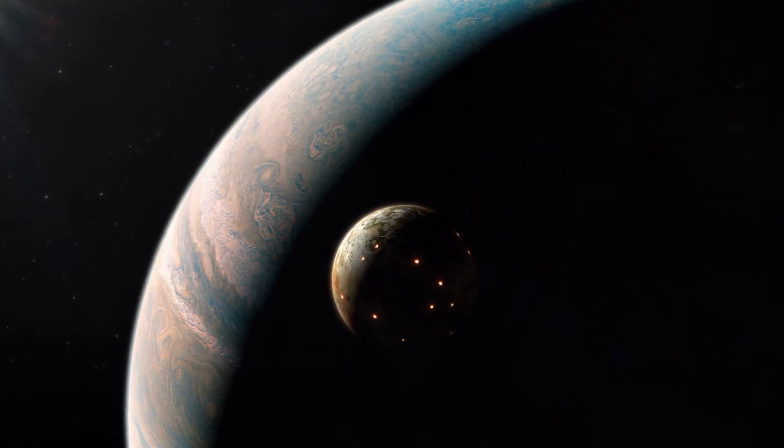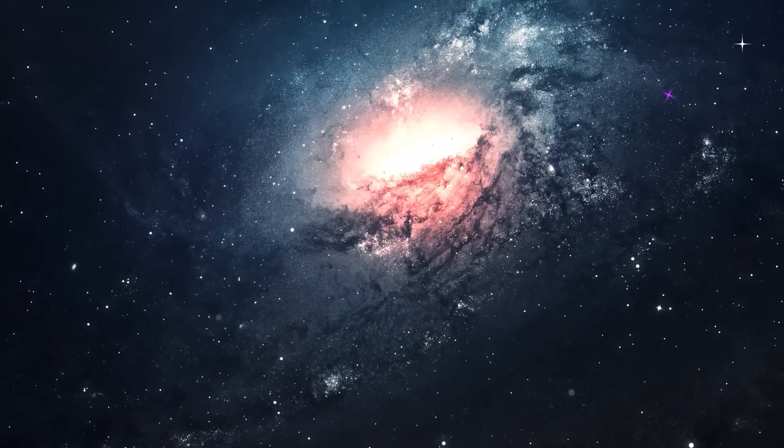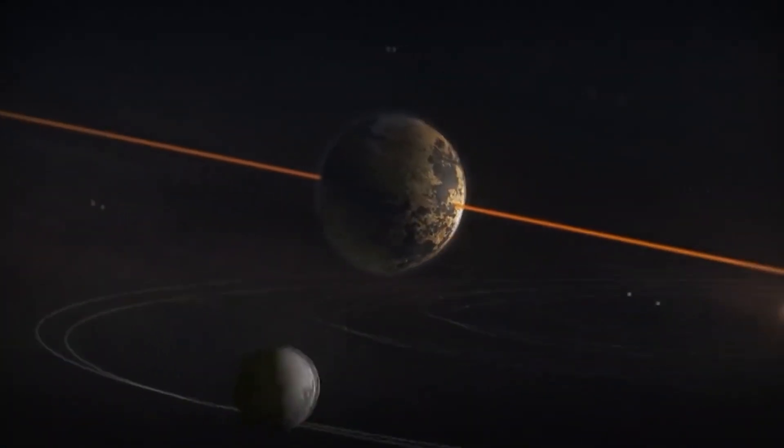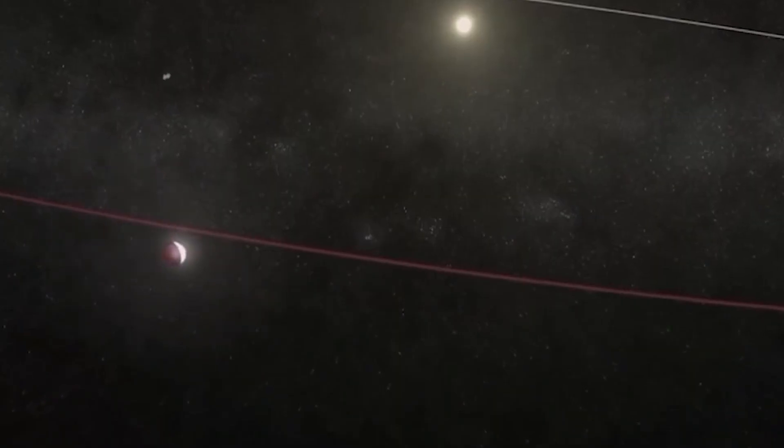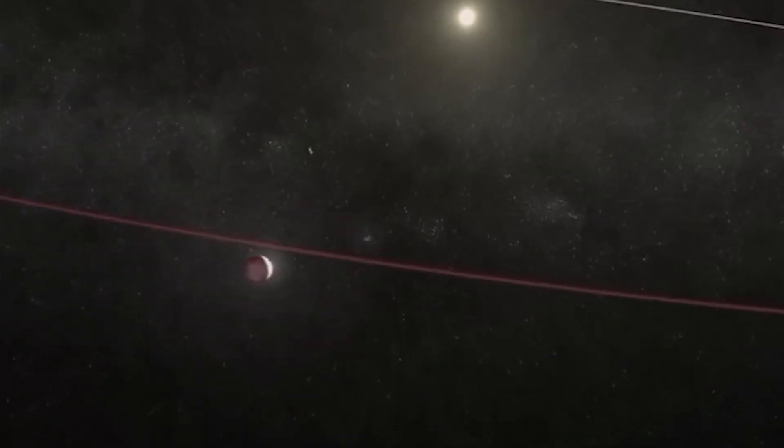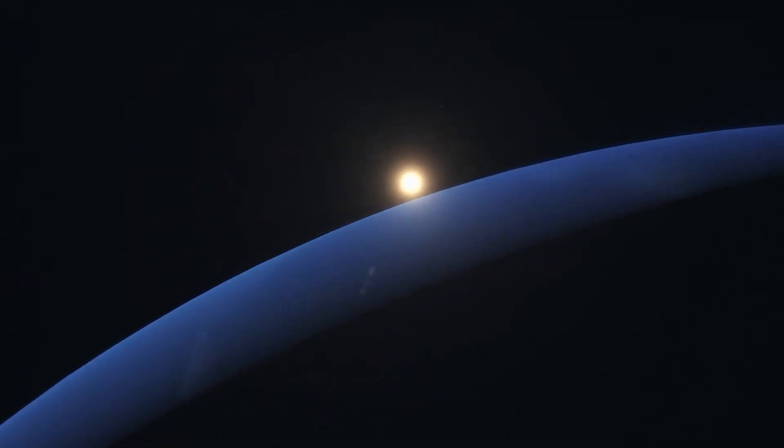The odds are low, maybe two tenths of a percent over the next five billion years, but that's still much higher than previously thought. And you can see this everywhere in the universe. Gravitational pulls are powerful. Even Pluto, once thought safe due to its orbital dance with Neptune, could be kicked out of its rhythm by a passing star.